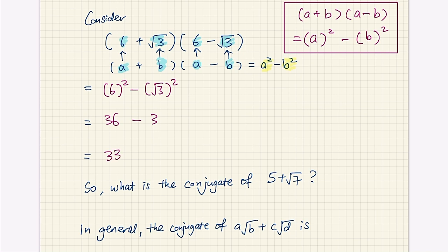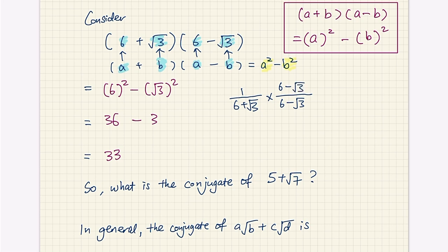So what I've done is: by multiplying 6 plus root 3 with 6 minus root 3, I can turn 6 plus root 3 into a rational number. For example, if I were asked to rationalize 1 over 6 plus root 3, I would multiply the denominator by 6 minus root 3, and of course do the same to the numerator to balance it. Then I get a denominator of 33 — the denominator is now rationalized to the rational number 33 — and the numerator is just 6 minus root 3, which is fine.